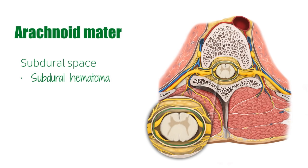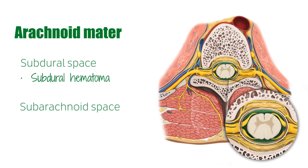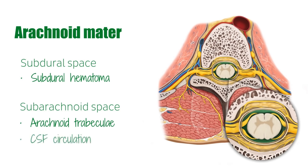Another space formed by the arachnoid mater is the subarachnoid space, indicated by the green highlighted area in this section of spinal arachnoid mater. It is located between the arachnoid mater and the underlying pia mater, and contains the arachnoid trabeculae — thin fibrous filaments that hold the two layers in place. The subarachnoid space, bounded by the impermeable arachnoid and pia mater, is filled with CSF and provides a pathway for CSF circulation and absorption around the brain and spinal cord.